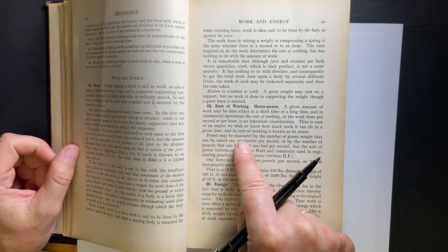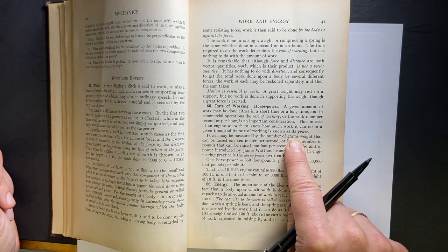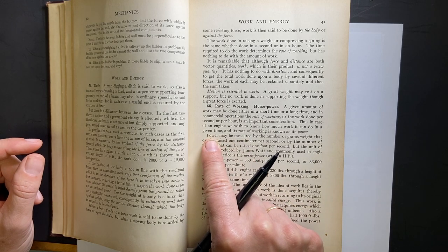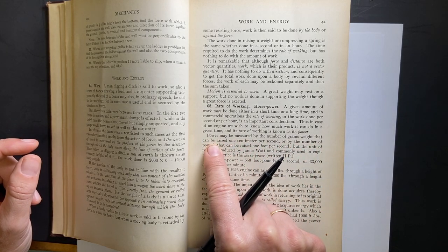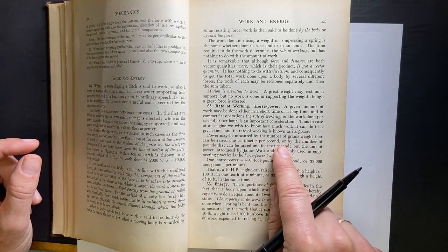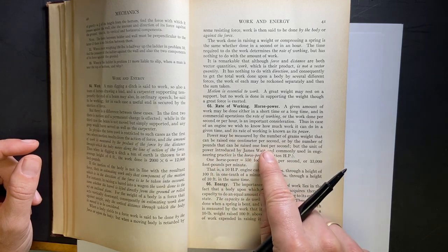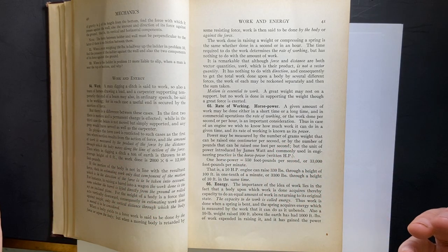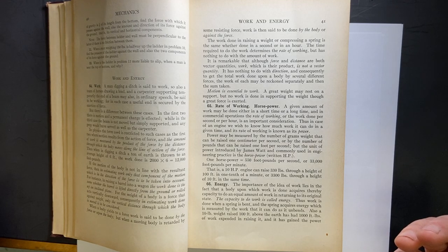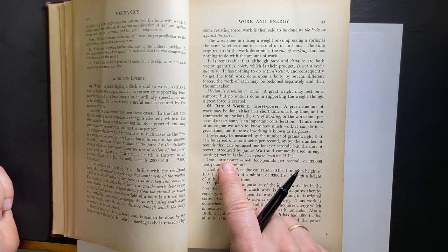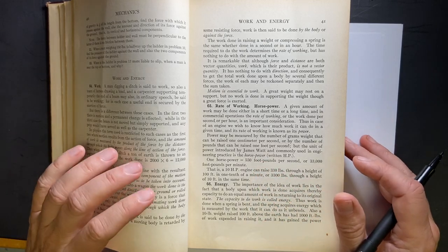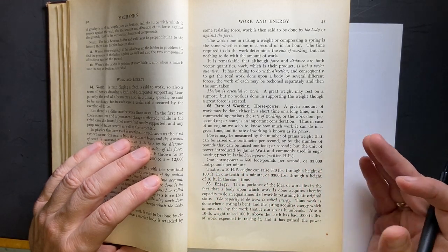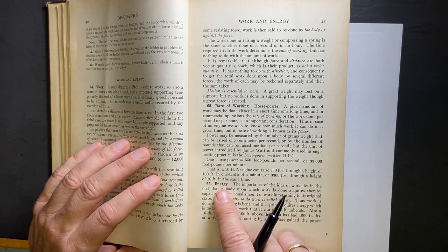Power measured in the number of grams that power... This is funny, right? They switch between grams and pounds. That's interesting. I wonder when Europe switched over to metric system. Power may be measured in the number of grams of weight that can be raised one centimeter per second or by the number of pounds that can be raised one foot per second. But the unit of power by James Watt is the horsepower or the watt. One horsepower is 550 foot pounds or 33,000 foot pounds per minute. That's funny they don't use the energy of watts, which is one joule per second.